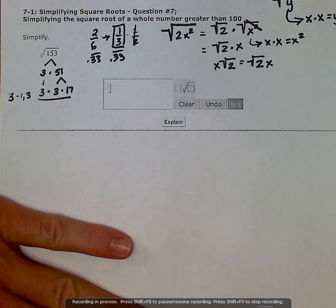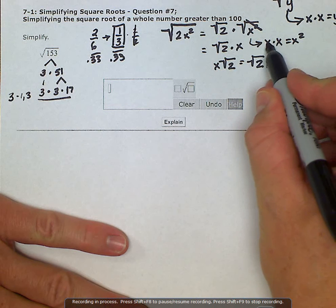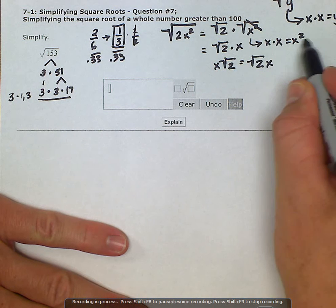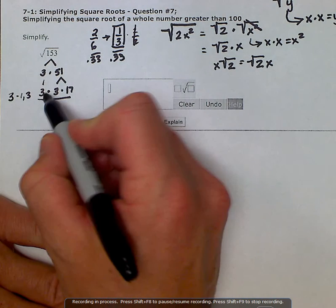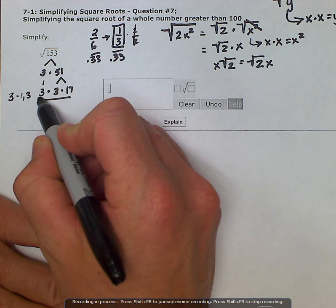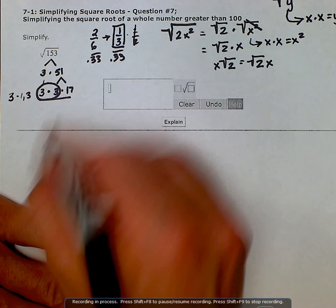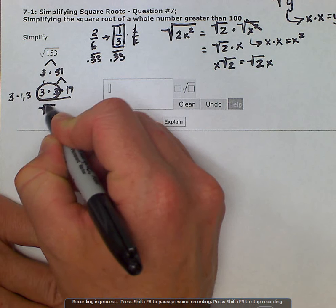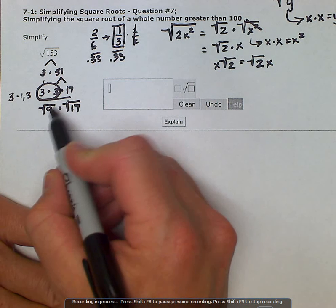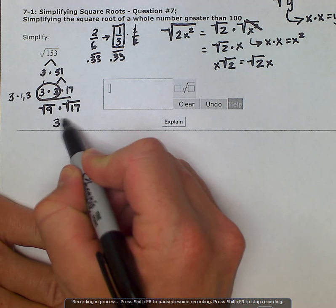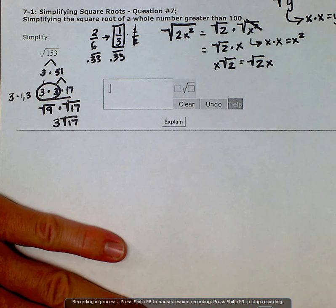Now what we're looking for is any couple, right? Two numbers, when multiplied to themselves, equals that radicand or a perfect square. Here we have a perfect square, 3 times 3. It's a couple. 3 times 3 we know is 9. We could express this again as the square root of 9 times the square root of 17. The square root of 9 we know is 3, and the square root of 17 is not a perfect square. And this is what we simplify it down to.